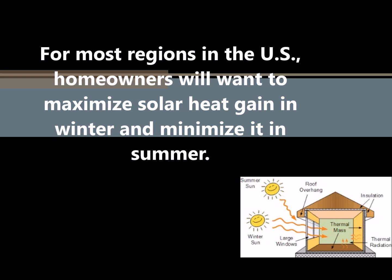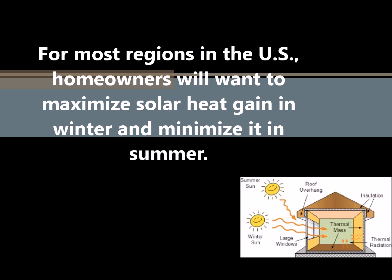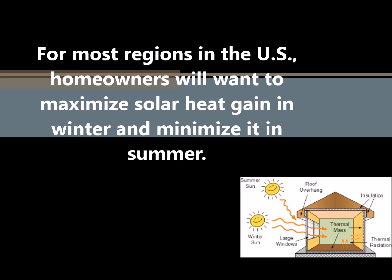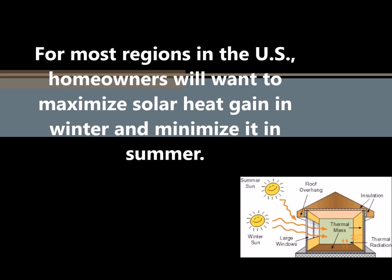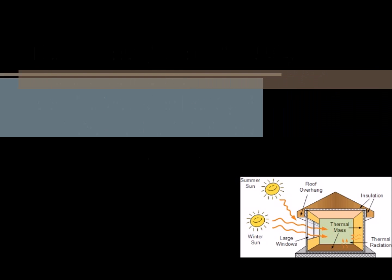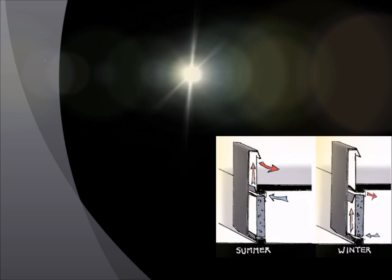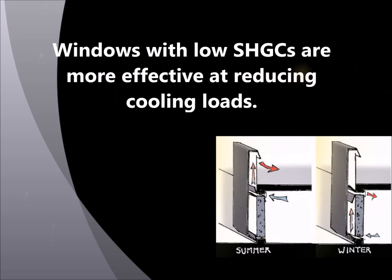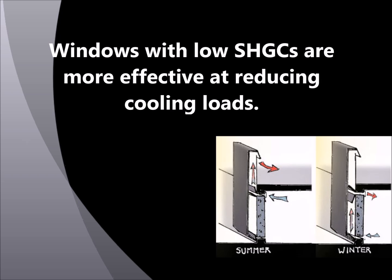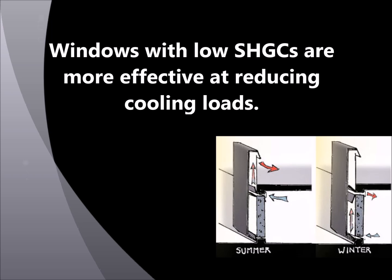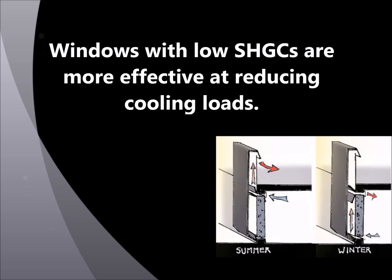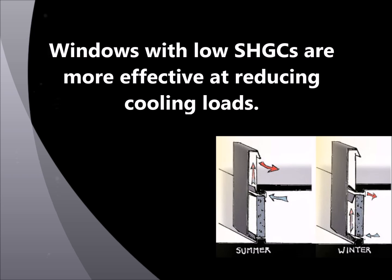Next we look at cooling dominated climates. In cooling climates, particularly effective strategies include preferential use of north facing windows and generously shaded south facing windows. Windows with low SHGCs are more effective at reducing cooling loads. The following types of glazing help to reduce solar heat gain and lower a window's SHGC: tinted windows, reflective, low-E, and spectrally selective. Most of these glazing types, except for spectrally selective, also help to lower a window's VT.